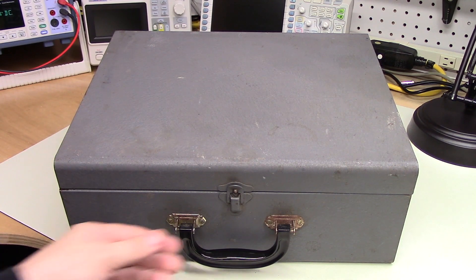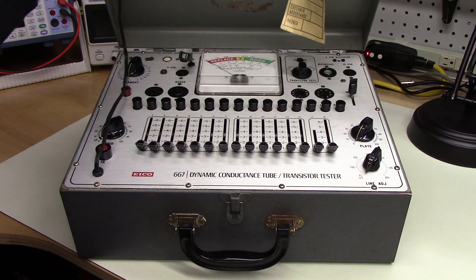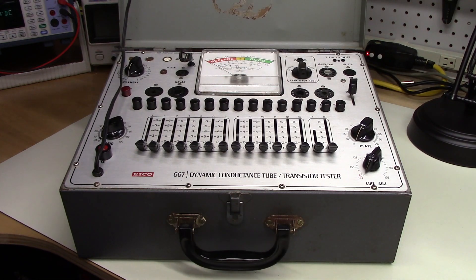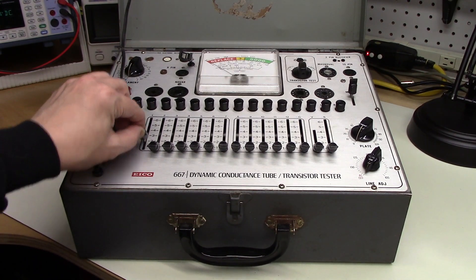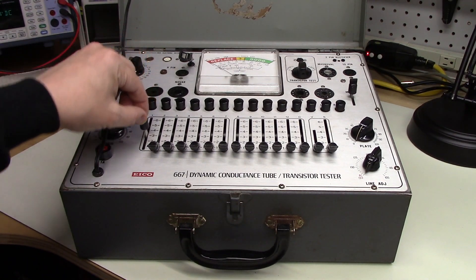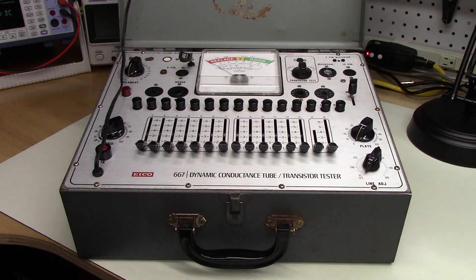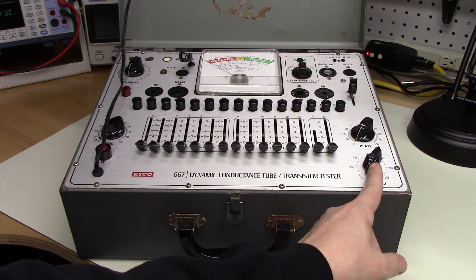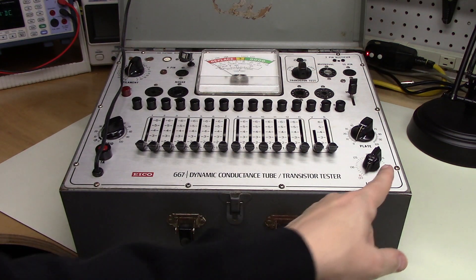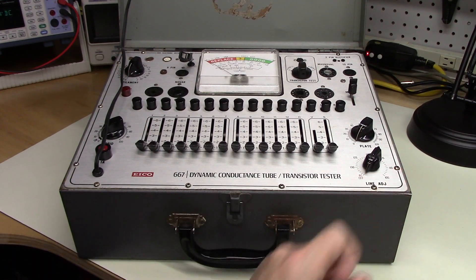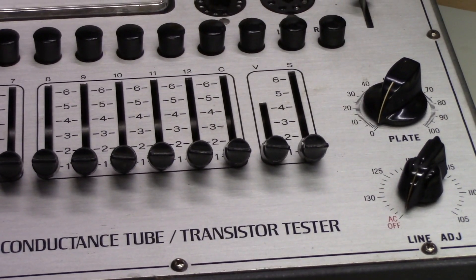This is an ICO Model 667 so-called Dynamic Conductance Tube Tester. You can see that it's very shiny, very clean. I was very happy to get this and see that it was in this condition. All the knobs are present. I think this chicken head knob is a replacement from an original, because you can see that the silk screening is a little bit larger than the knob itself.